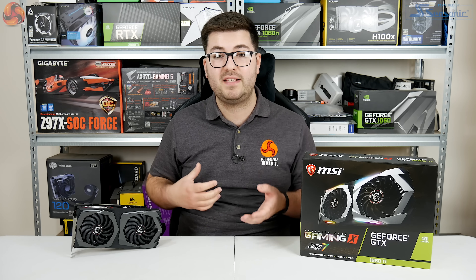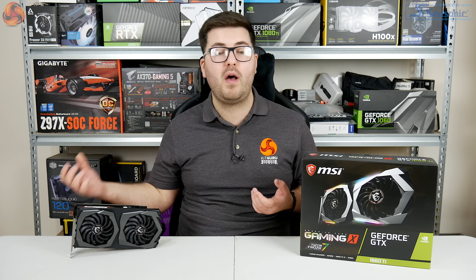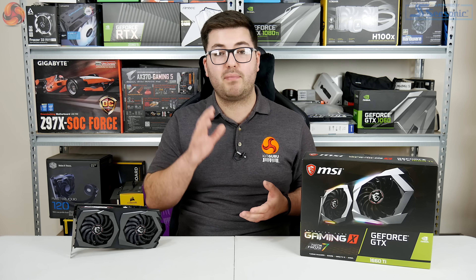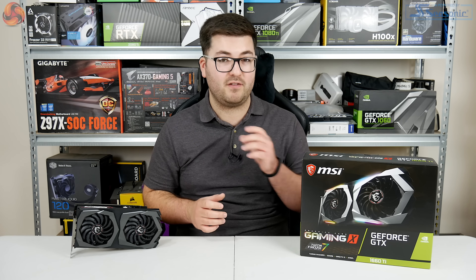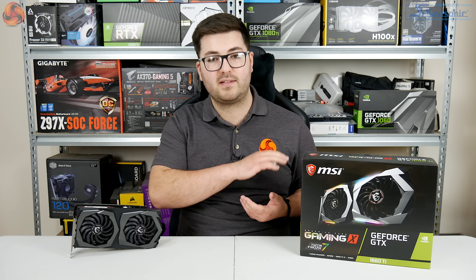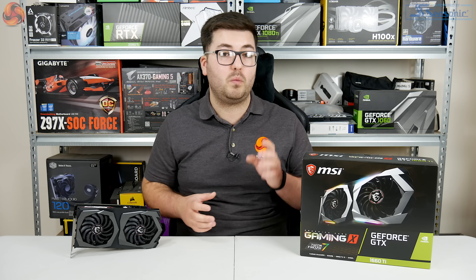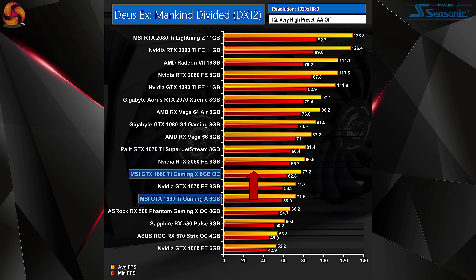For manual overclocking, despite this being an already factory-overclocked card, I was able to add an extra 100 MHz to the GPU core and 875 MHz to the GDDR6 memory. I had +145 MHz stable in 3DMark but it crashed in Deus Ex: Mankind Divided, so I scaled back to 100 MHz. With that overclock enabled, the card averaged just over 2 GHz — 2003 MHz to be exact.